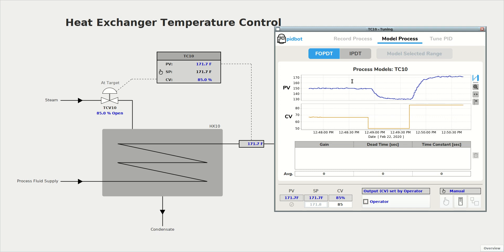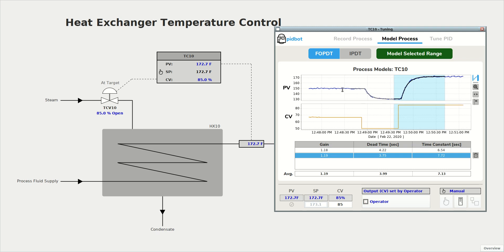So we're going to start our model at a time where the process is at a steady state. And we'll just drag over across our first bump test. We can model that range and we can model the second bump again, starting at steady state. And if we want, we can do a model of both bumps together. And down here we have our process models and the average process model.